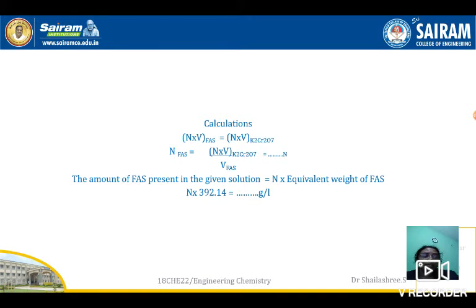In summary: take FAS solution in a beaker, add one test tube of H₂SO₄, dip the calomel and platinum electrode assembly, connect to the potentiometer, and carry out the titration by adding potassium dichromate from the burette in 0.5 ml increments. After each addition, bubble the solution and note the potential. Plot ΔE/ΔV against volume to get a peak — that gives the equivalence point — and calculate the amount of FAS per litre. With this, the potentiometric estimation of FAS is complete.